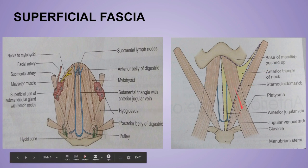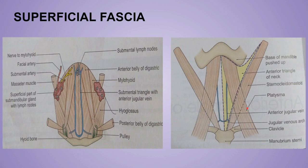The superficial fascia of the anterior region of the neck mainly contains four things. First is the platysma muscle. Second is the anterior jugular vein, which begins in the submental region below the chin and descends downward about one centimeter from the median plane.